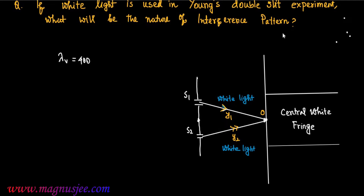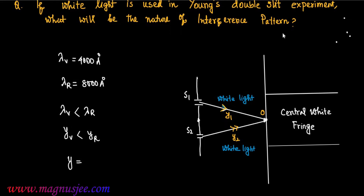The wavelength of violet light is 4000 Ångström and the wavelength of red light is 8000 Ångström, so the wavelength of violet light is less than the wavelength of red light. That is why the distance of the nth violet fringe will be less than the distance of the nth red fringe. The distance of the nth bright fringe from the central bright fringe is y_n = nλD/d, where D is the screen distance and d is the slit separation.